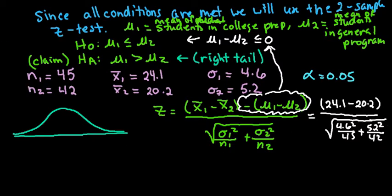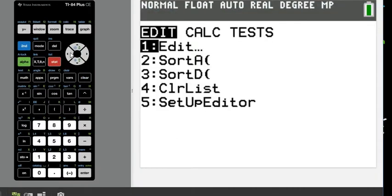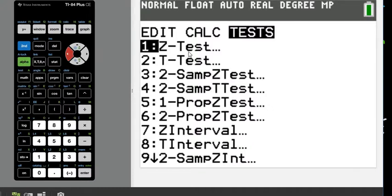Now let's grab our calculator to find z and the p-value. The p-value is the probability of getting results as extreme as ours if there really were no difference between the two groups. In the calculator, hit STAT, go over to TESTS. There are many tests listed, so you need to know which one to select. We established we're using the two-sample Z test, so choose option 3.